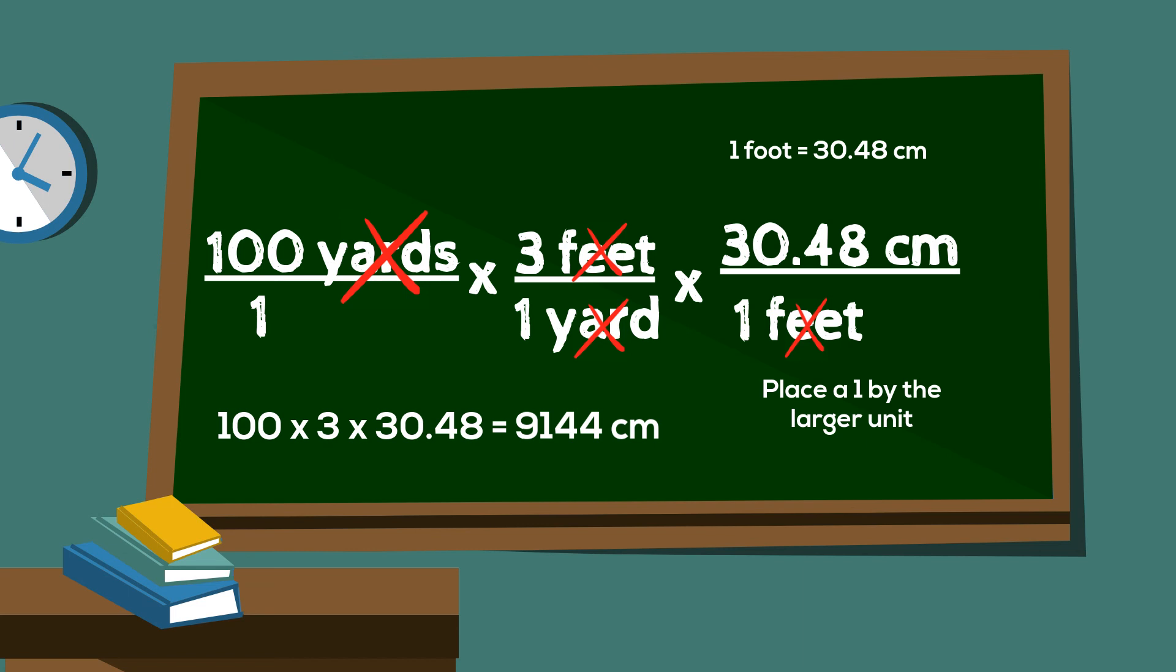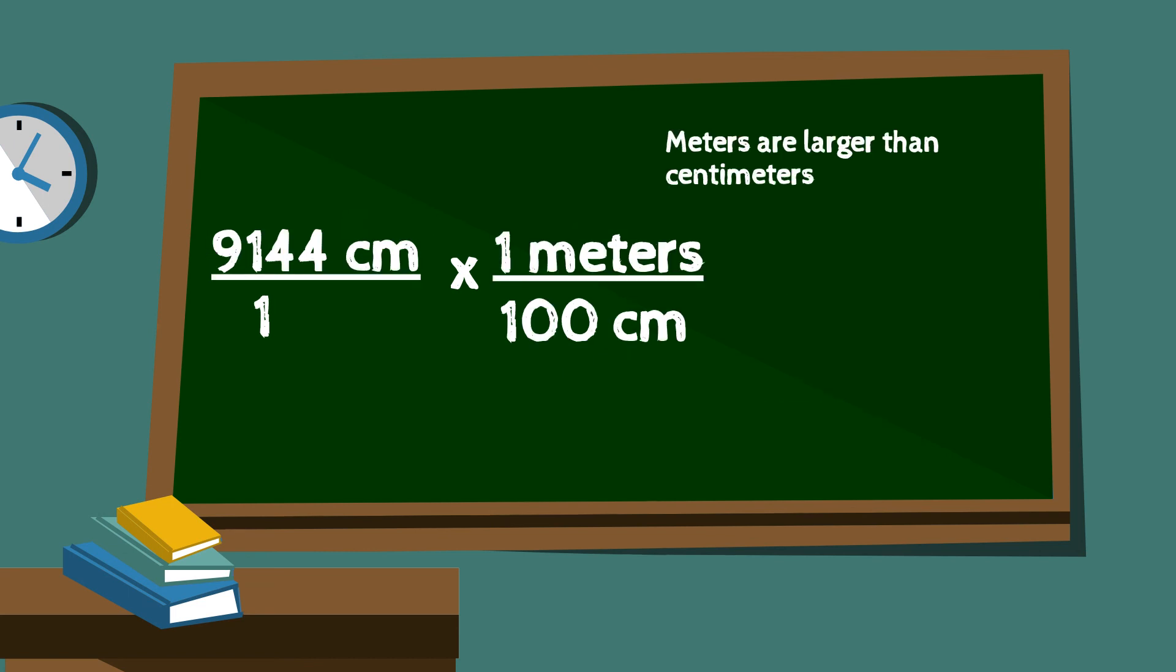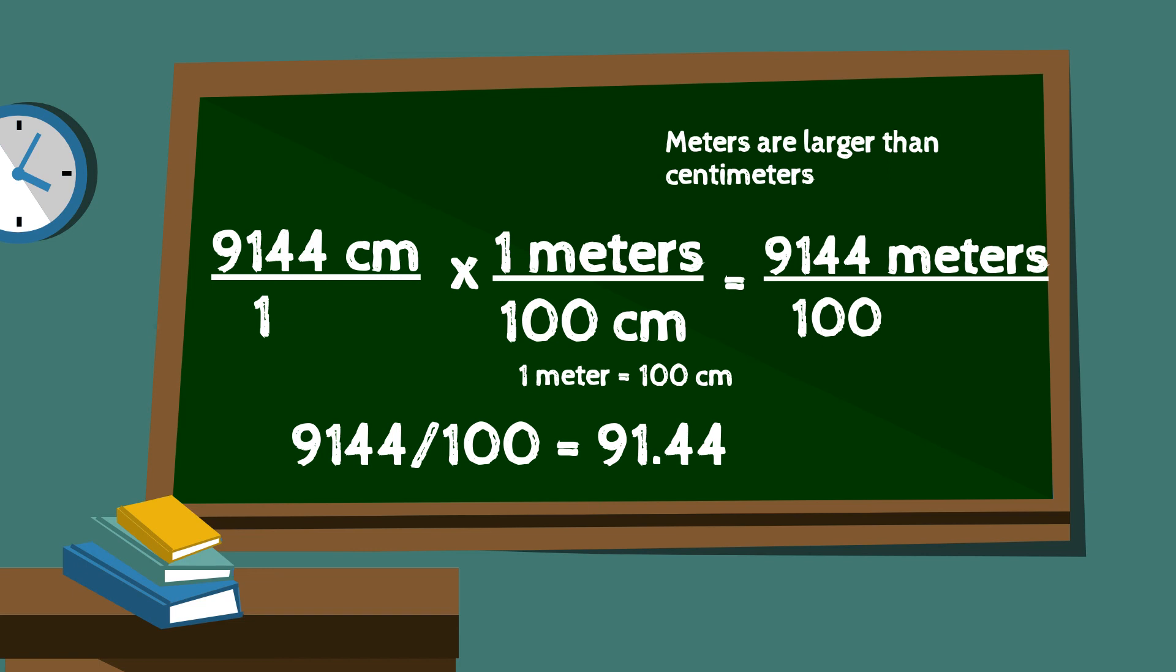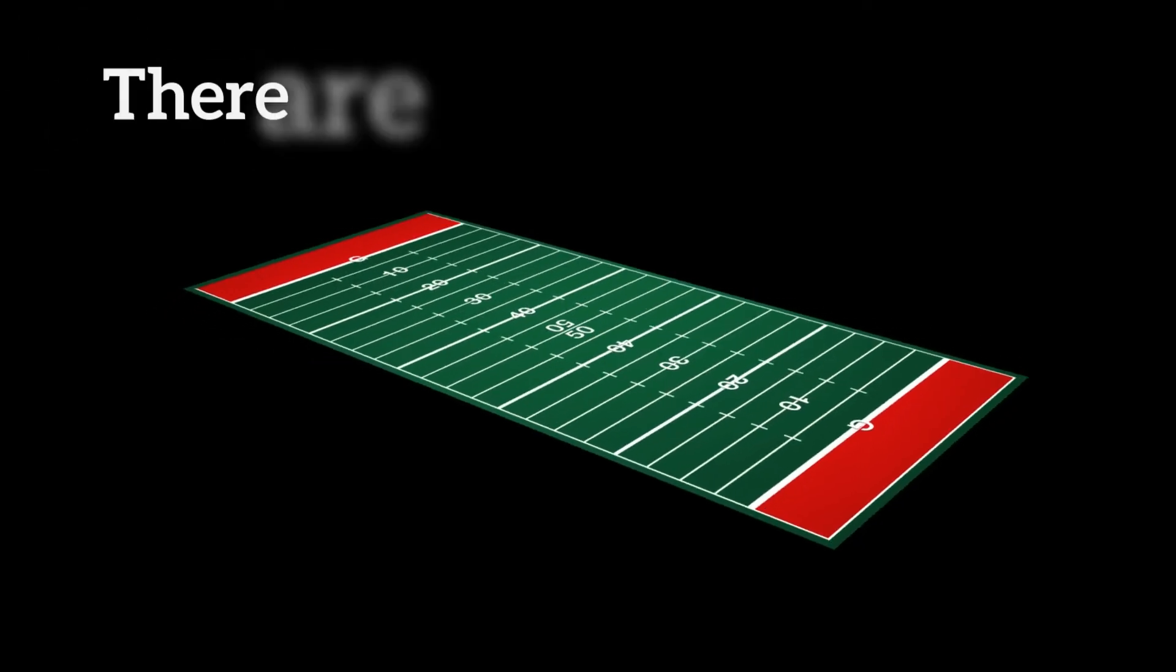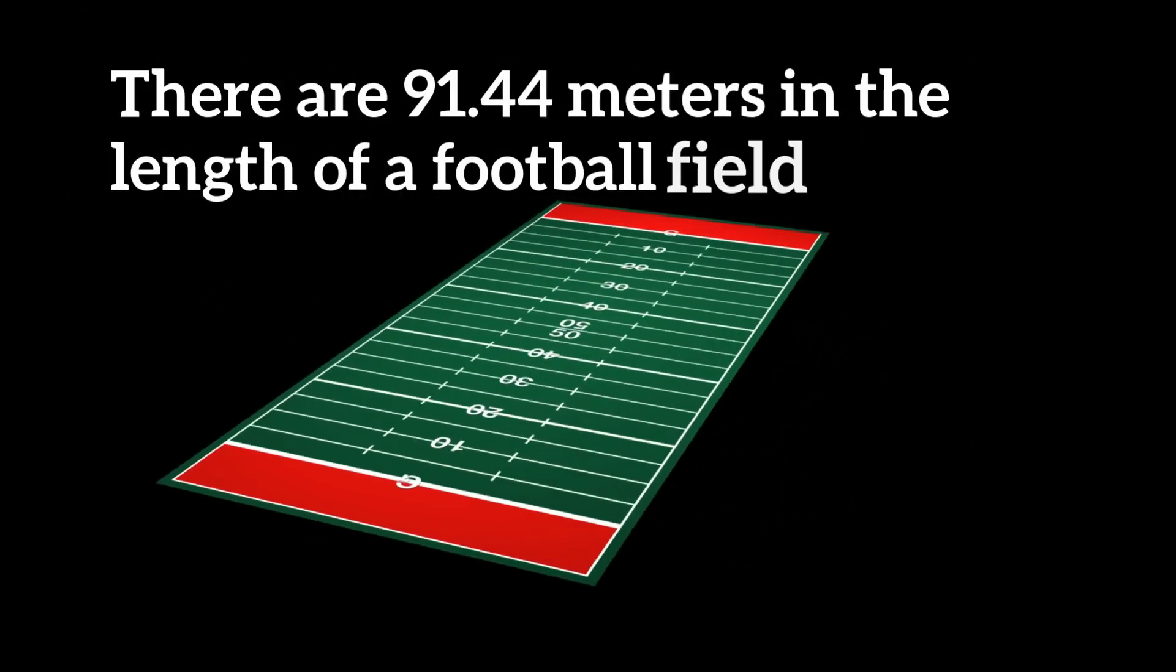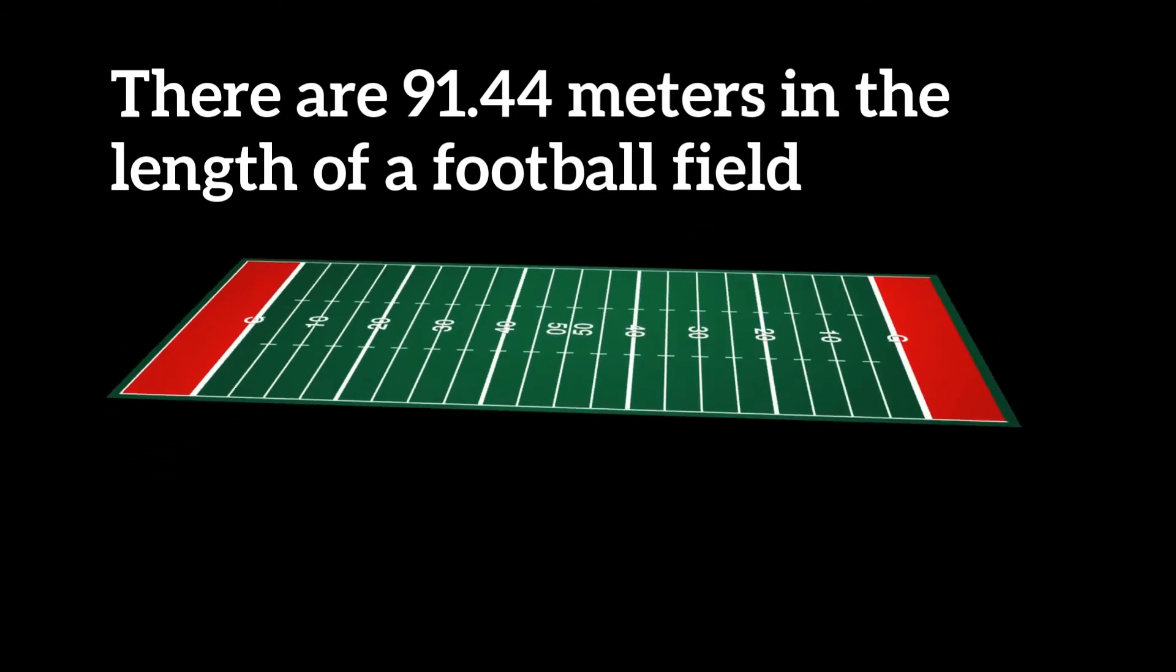Finally, I convert 9144 centimeters by writing 9144 centimeters over 1 and a new fraction as follows. I will multiply and this tells me that there are 91.44 meters in a football field.